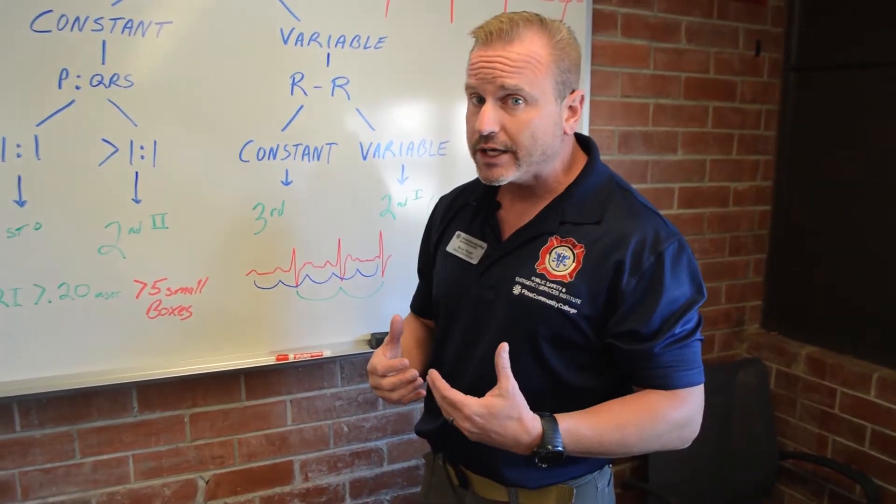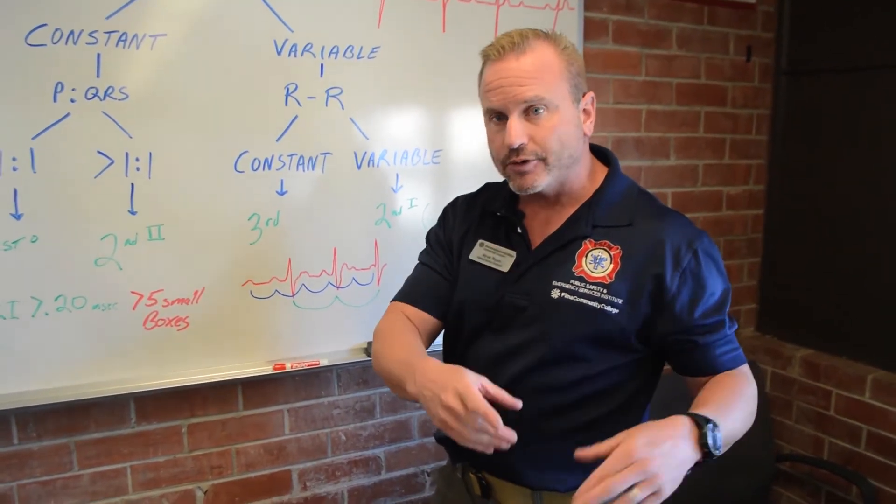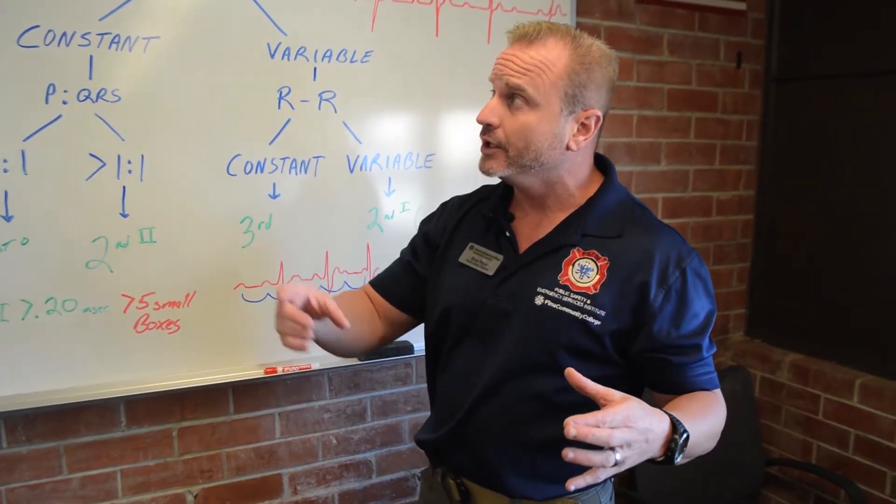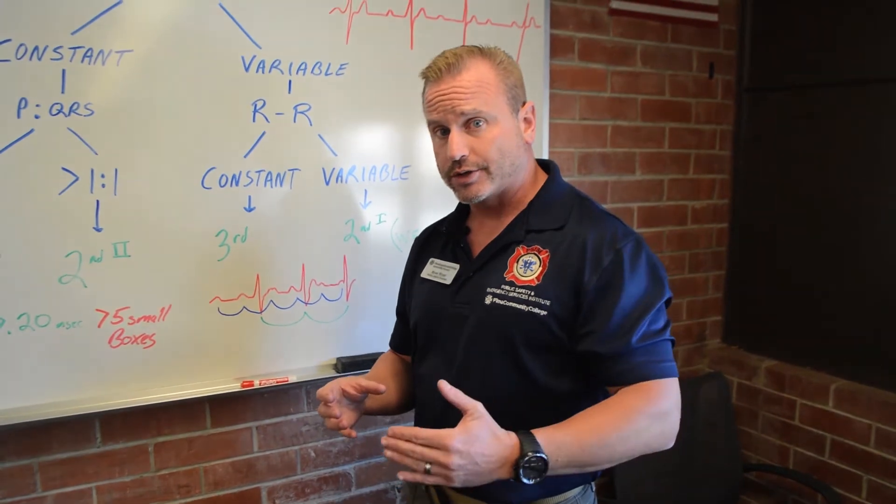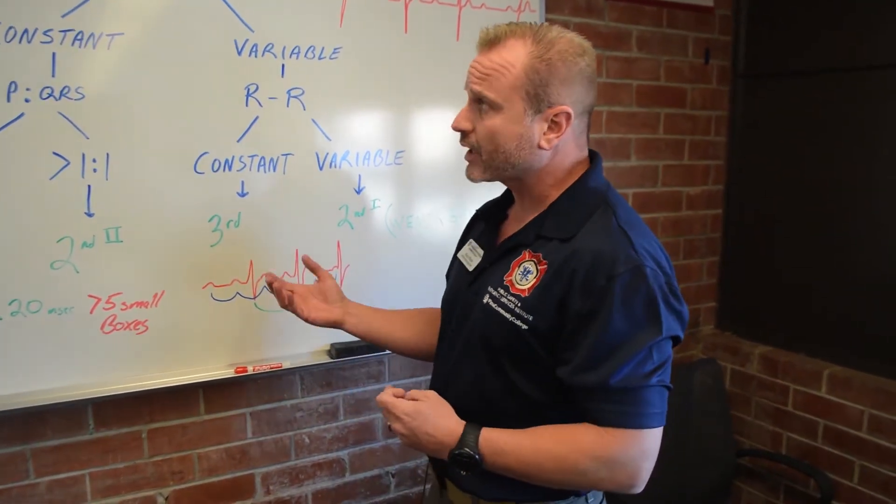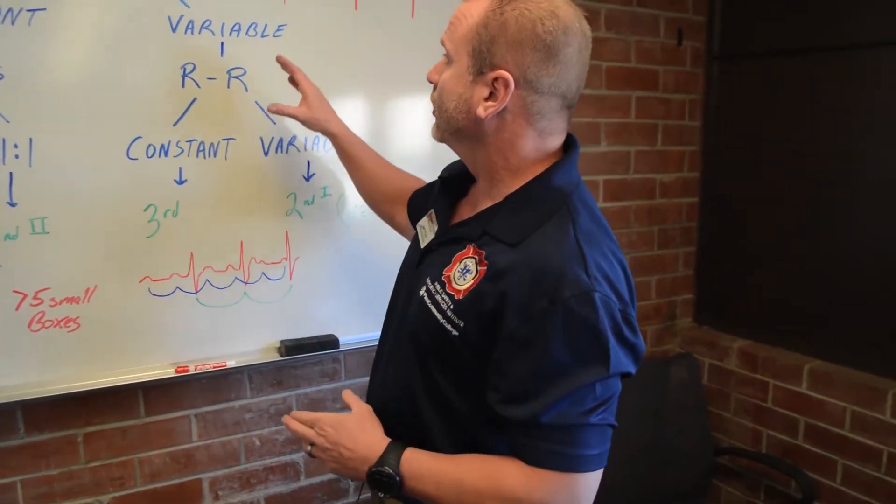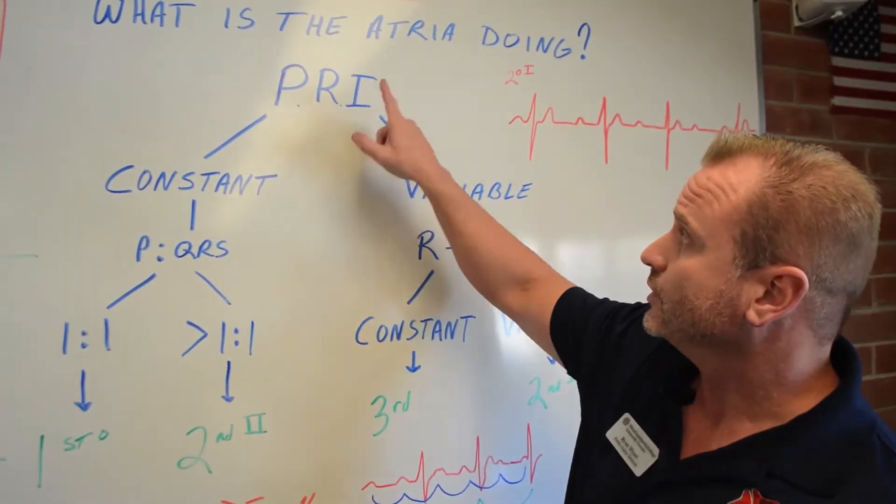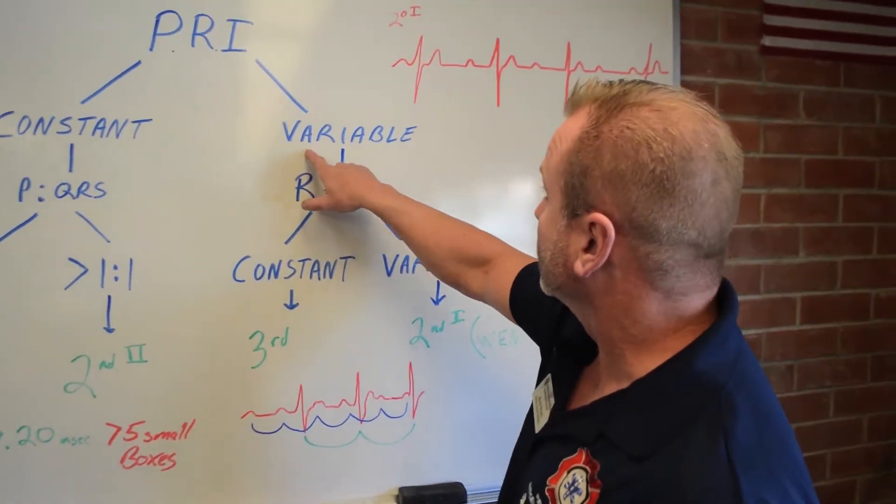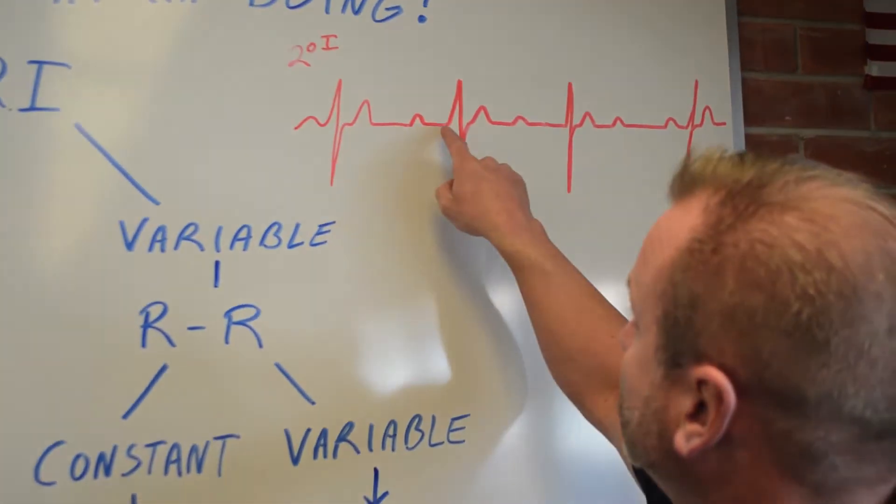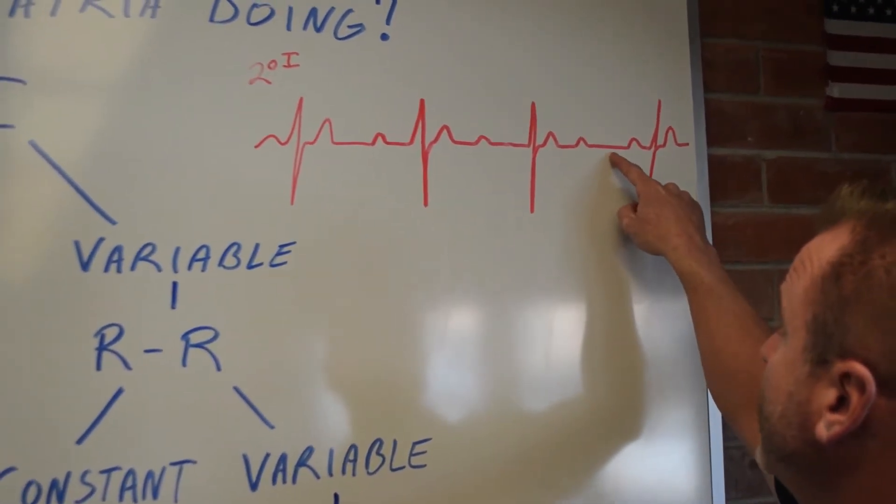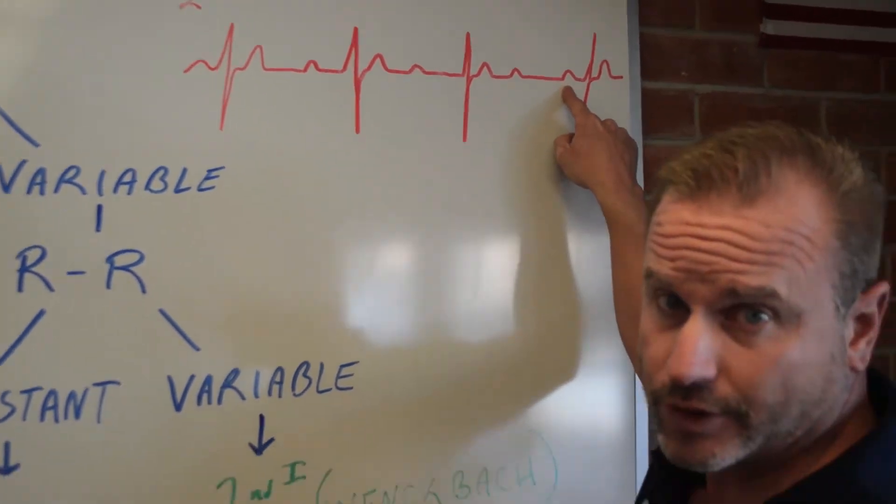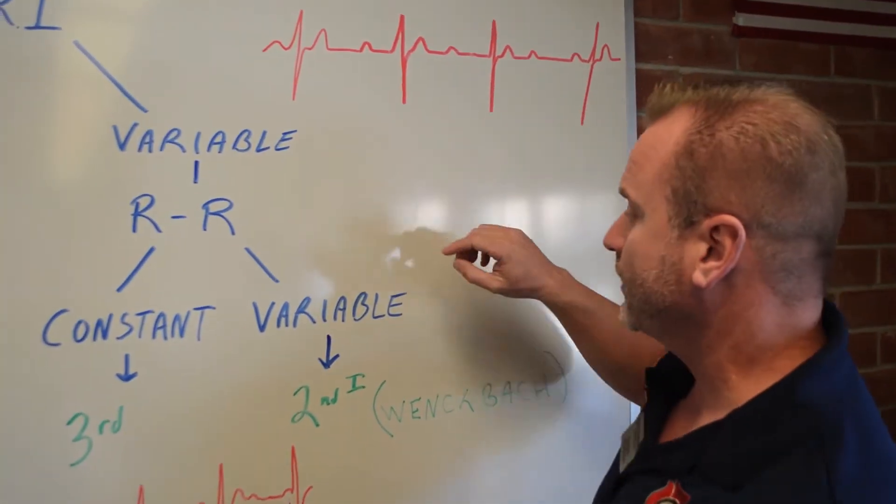Put the pads on just in case. These blocks going from a first or a secondary type one to a secondary type two to a third, these blocks, they get worse and they can escalate as the patient deteriorates. So once again, what's the atria doing? My PR interval, it's variable because you can see my PR interval keeps changing and keeps getting longer. Now I don't even have a PR interval and it starts over again. So that's your second degree type one.